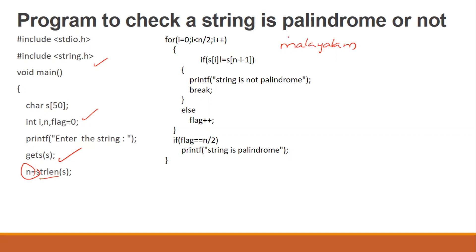One method is: if you want to start from index 0, 1, 2, 3, 4, 5, 6, 7, 8 — the string has length 9. So the starting index is 0 and the ending index is 8, which is length minus 1. We match the first and last elements, then the second and second-to-last elements, continuing to the center element.